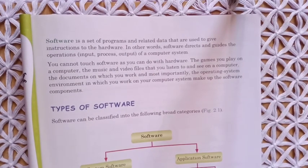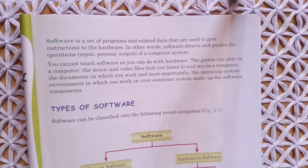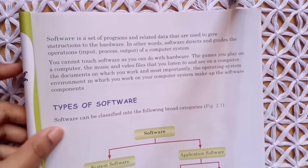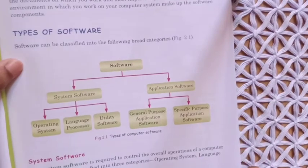Most importantly, the operating system works as a manager in a computer system — we cannot touch that software either. The operating system, such as Windows 7 or Windows 10, works as a manager. It makes it very easy to create folders and lets us save our files easily, but we cannot touch that software.